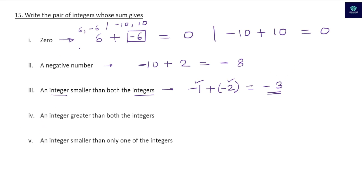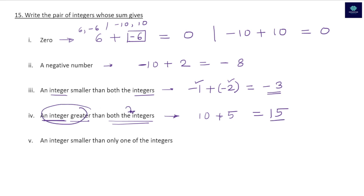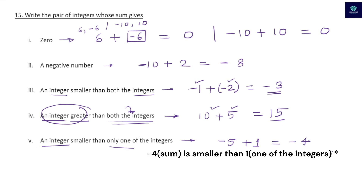Pairs for (iv) sum greater than both integers: take two positive integers, e.g., 10 + 5 = 15, which is greater than both 10 and 5. (v) Sum smaller than only one of the integers: e.g., (-5) + 1 = -4; -4 is smaller than 1 but greater than -5.